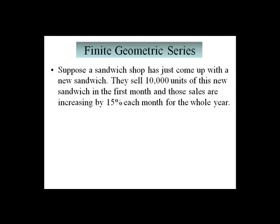Because our numbers go up by a constant 15%, we can look at the number of sandwiches sold each month as the terms in a geometric sequence. The first thing we want to do is recall our formula for calculating the general term of a geometric sequence. It involves the first term, a sub 1, and the common ratio, r.